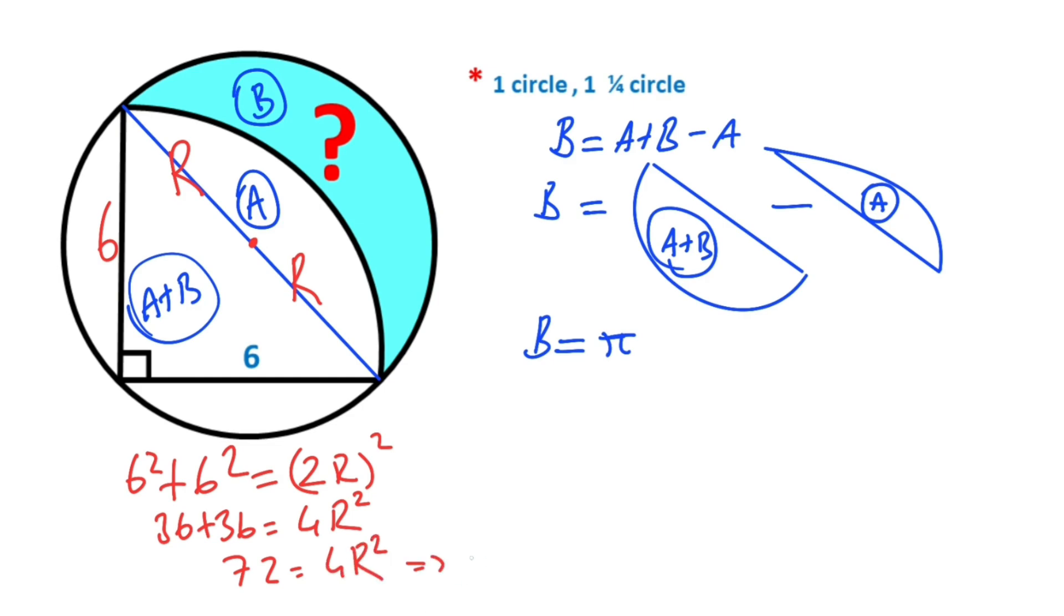So r squared equals 18. If we plug in this value to the formula, π times r squared equals π times 18 over 2 because of semicircle, minus region A.